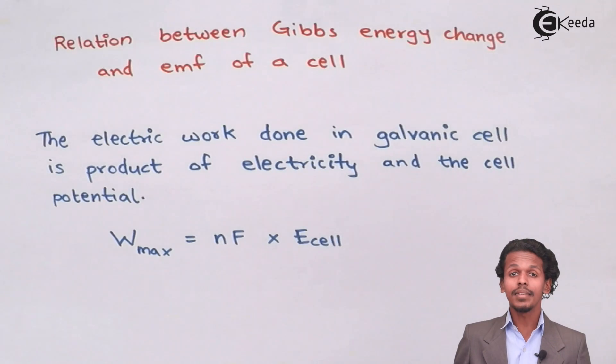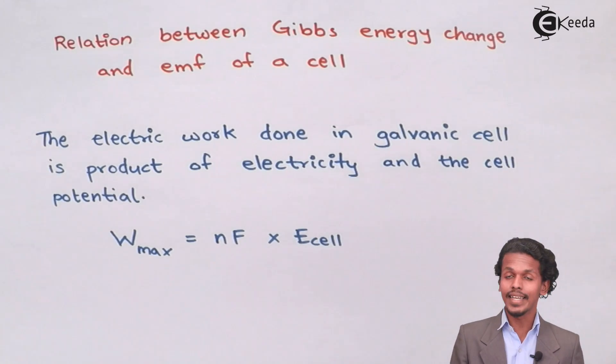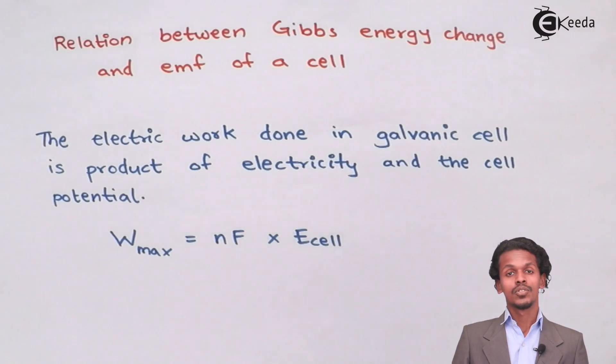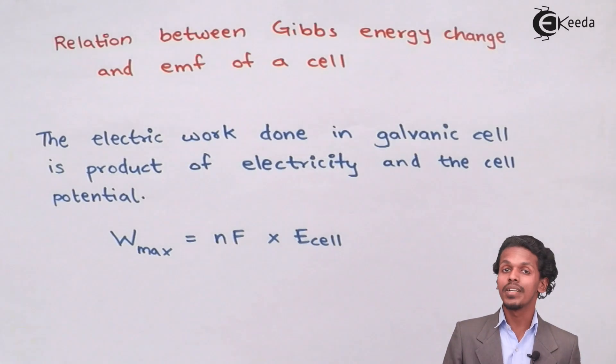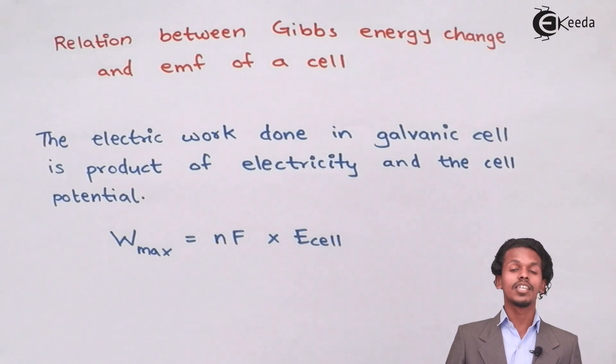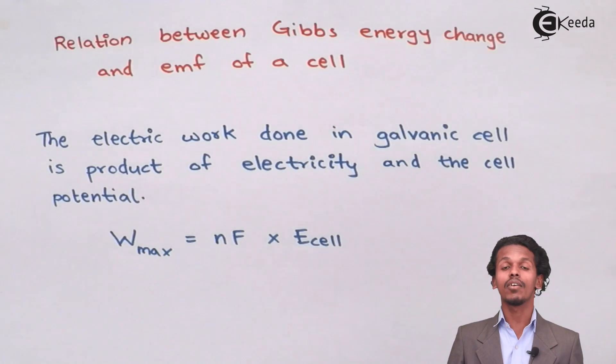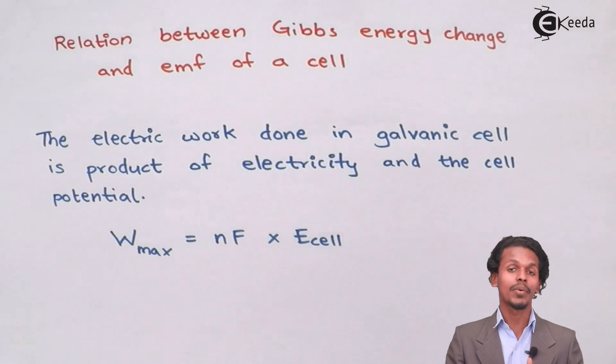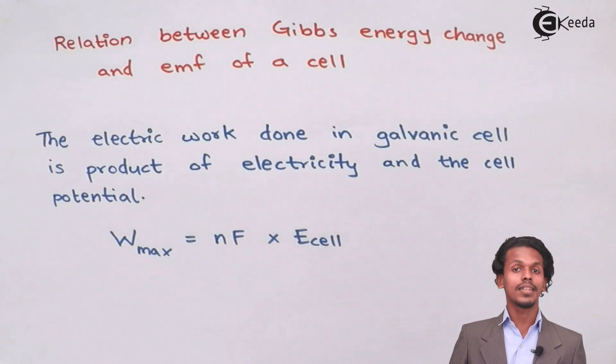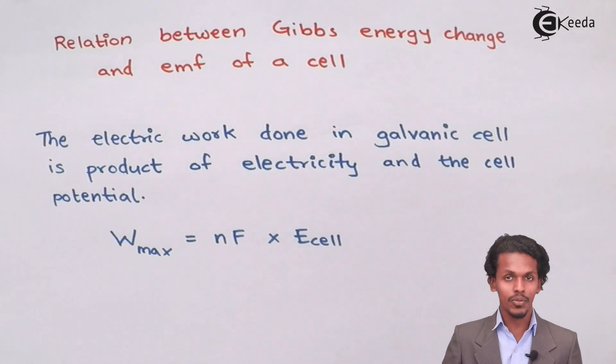In a galvanic cell, as we know, electricity is being generated, or we could say that chemical energy is converted into electrical energy. So during the formation of electricity, work is done, and this work is related to Gibbs free energy as well as it will be dependent on the E of the cell or cell potential of the cell. So now let us see what is the relation between all those things.